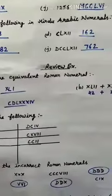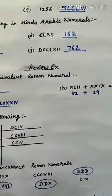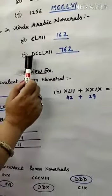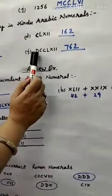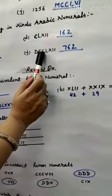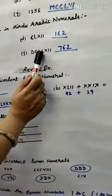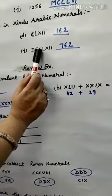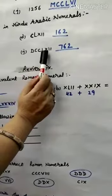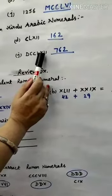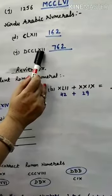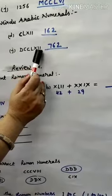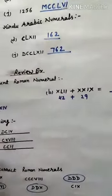For the next one: D is 500, CC is 200, giving 700. Then LX is 60, and II is 2. So the full number is 762.